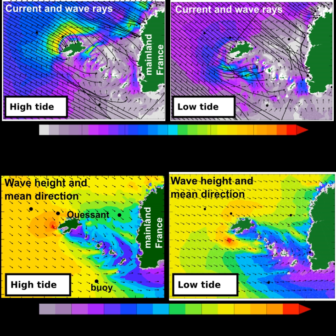Ocean currents can also be important, in particular in western boundary currents such as the Gulf Stream, Kuroshio, or Agulhas current, or in coastal areas where tidal currents are strong. Waves are also affected by sea ice and icebergs, and all operational global wave models take at least sea ice into account.